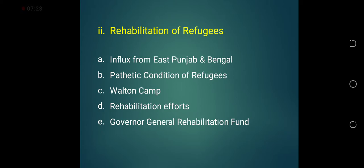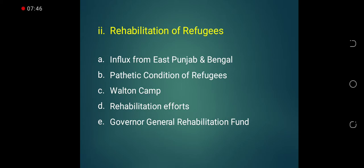These refugees were mostly in a very miserable, pathetic condition because they had fled their homes without any sustenance. Majority of them were even wounded by the Sikh attacks. They were given shelter in a camp set by a British gentleman, Sir Walton, at the Wagah border, where they were provided food, shelter, medical attention, and in the long run, education. Quaid-e-Azam took personal interest in the rehabilitation of the refugees. He constituted the General Rehabilitation Fund and asked all wealthy Muslims of Pakistan to contribute to this fund so the problem could be tackled.